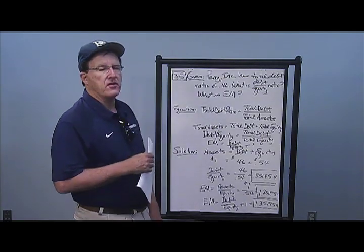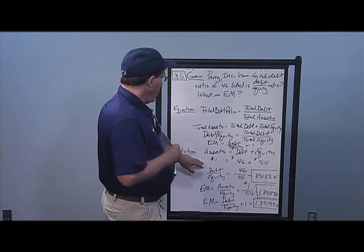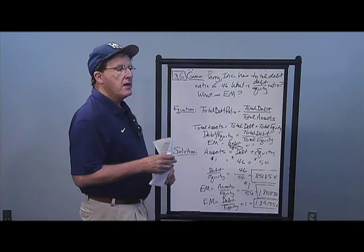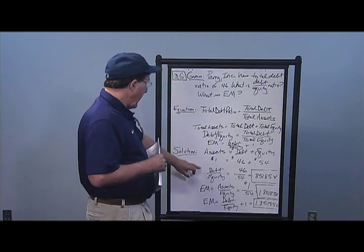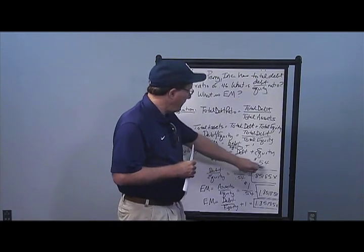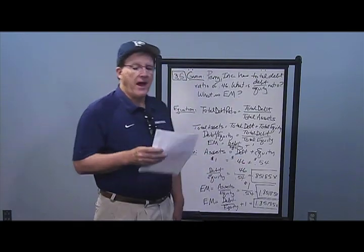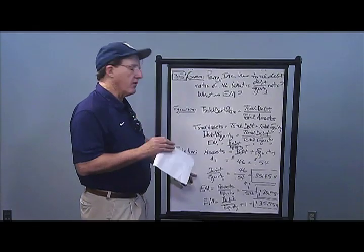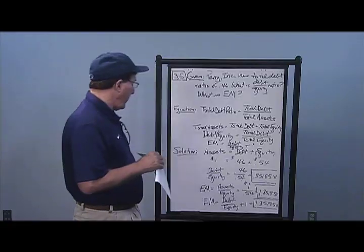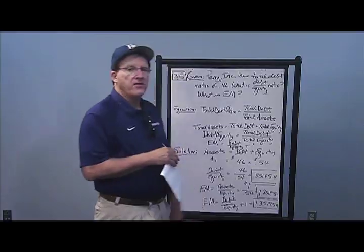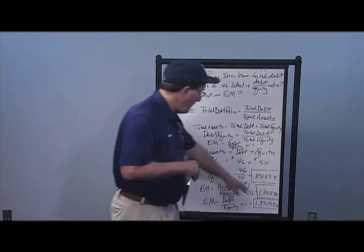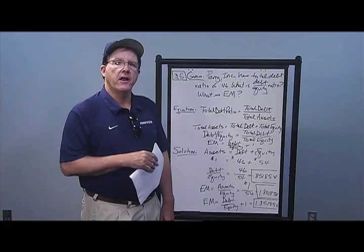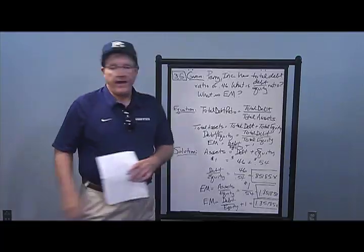The equity multiplier can also be calculated as assets over equity. If I have a dollar of assets, I have 46 cents of debt, meaning 54 cents of equity. So my debt-to-equity ratio is 0.46 divided by 0.54, giving 0.85185 times. For the equity multiplier, assets over equity is $1 divided by $0.54, giving 1.85185 times — which equals one plus the debt-to-equity ratio, as expected. Those are the answers to Problem 5.